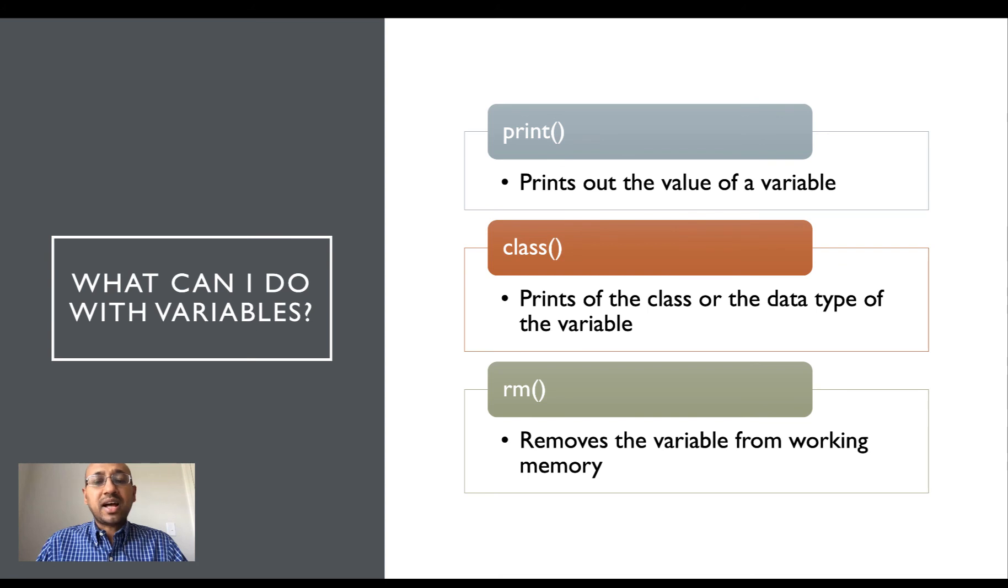The print function prints out the value of a variable. The class function prints out the class or the data type of a variable. And the rm function removes a variable from the working memory.